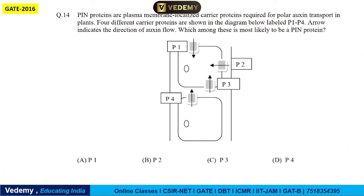Next question: PIN proteins are plasma membrane-localized carrier proteins required for polar auxin transport in the plant. Four different carrier proteins are shown in the diagram labeled P1 to P4. The arrow indicates the direction of auxin flow. Which among these is most likely to be the PIN protein?